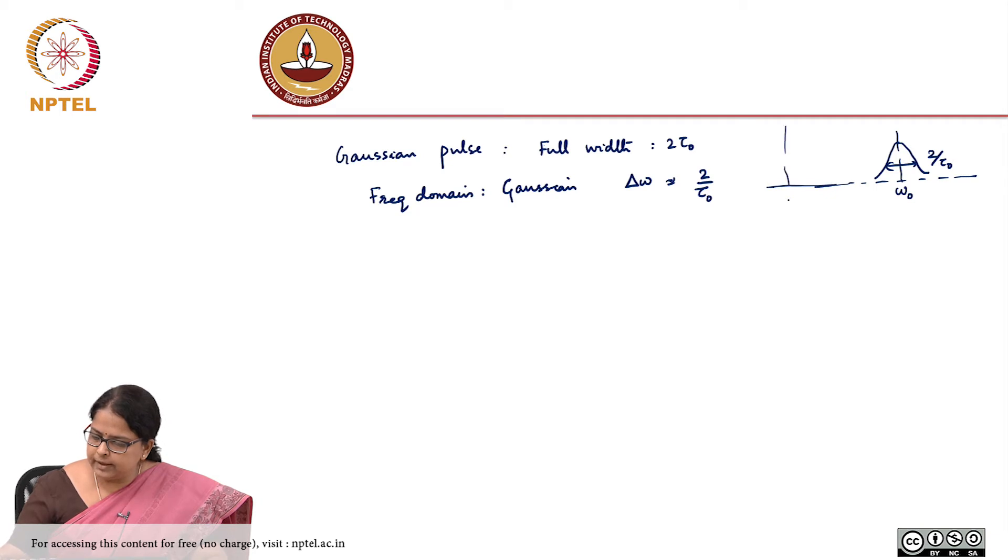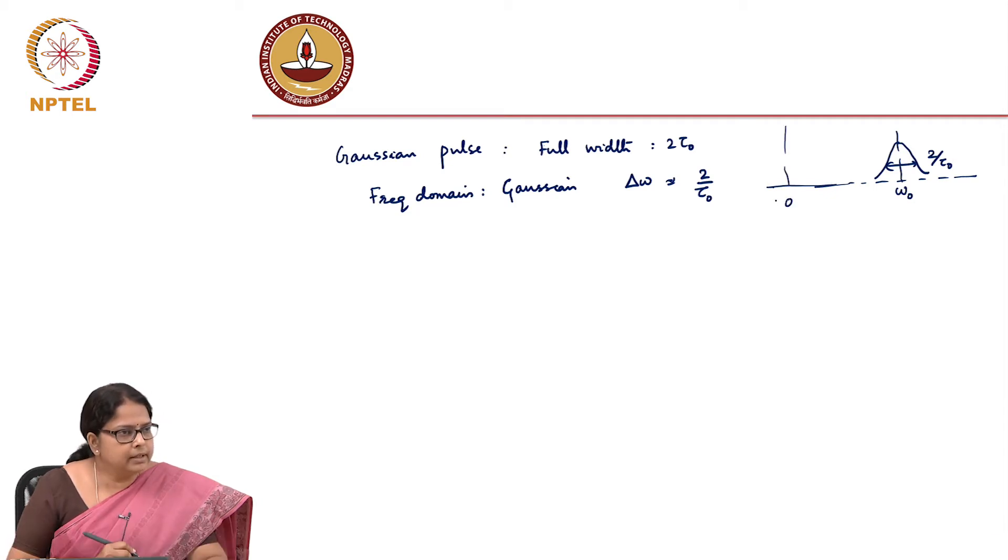There is a 0 frequency somewhere here, the DC somewhere here. This omega naught is your carrier frequency. If you are using 1550 nanometer, that carrier frequency is of the order of some 190 terahertz. What we also want to know is what is this delta omega with respect to omega naught, to get a feel for how spread your Gaussian is going to look like.